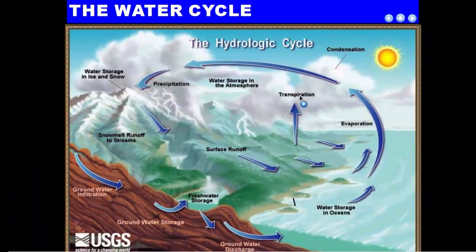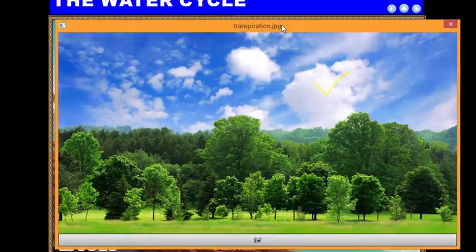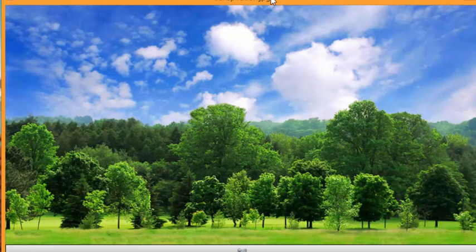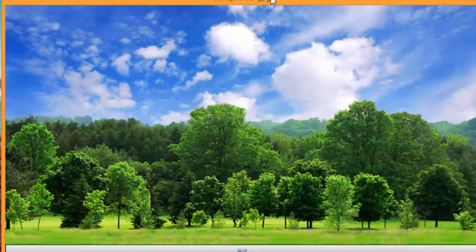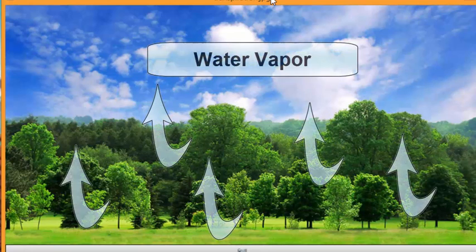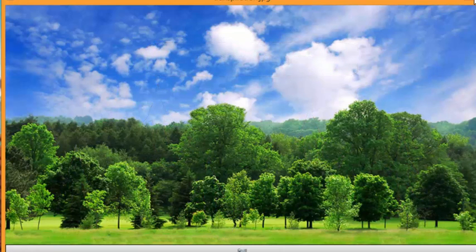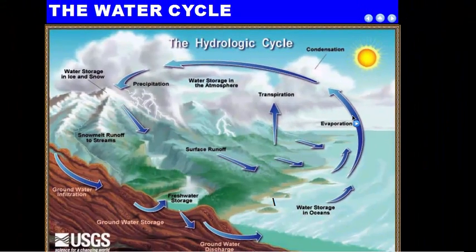The second way water vapor gets into the atmosphere is through transpiration, caused by trees and other plants. As we learned in seventh grade life science, all living things carry out cell respiration and make water vapor as a waste product. Plants do the same thing — as they make ATP energy, they create water vapor as a waste product and release it through holes in the leaves called stoma, and that water vapor moves up into the atmosphere.